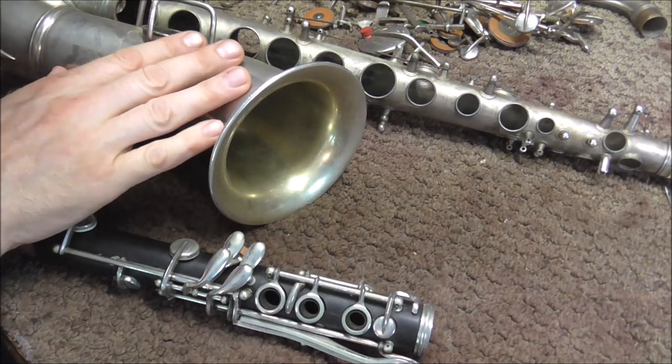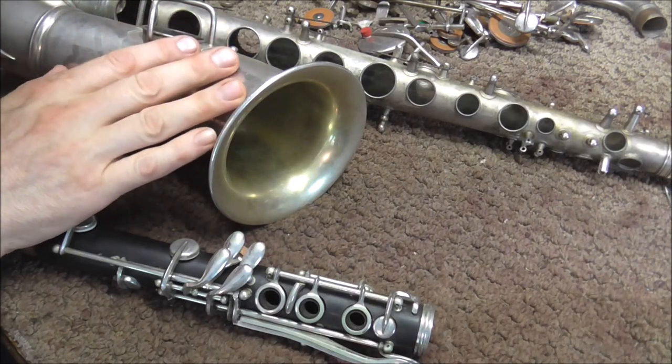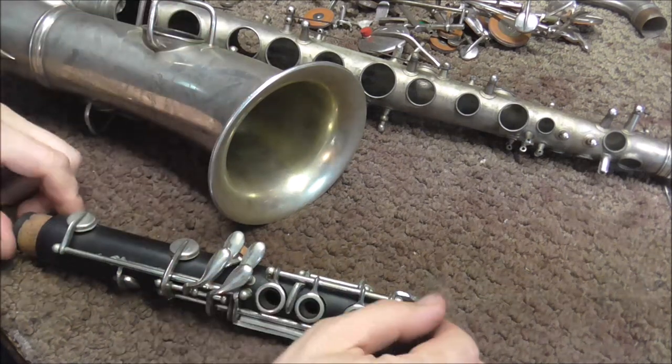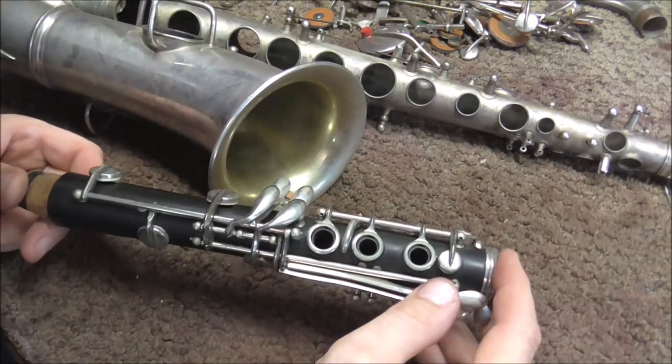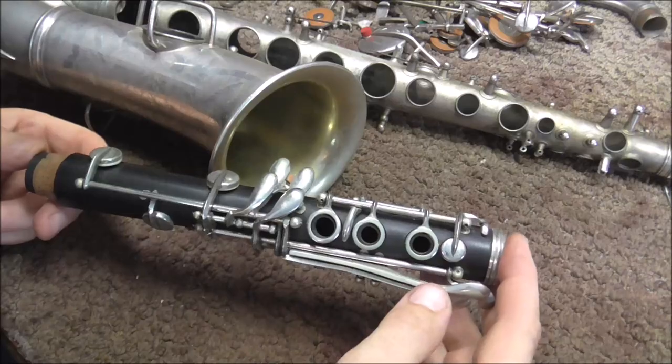On the saxophone that I'm working on, it has six of those locking screws, and they were all there. Clarinets have nine of those locking screws, and on this clarinet, there were only six.